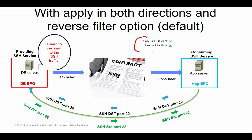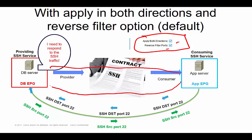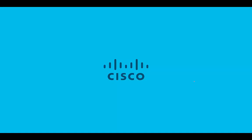The big takeaway: leave the default config most of the time. It doesn't mean we're setting up SSH communication in both directions — all this means is the consumer can send traffic to the provider, and these two options allow the provider to respond back. That's all. Thanks.